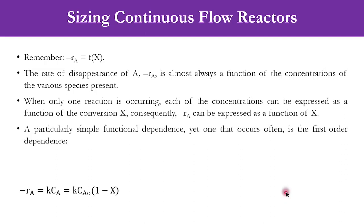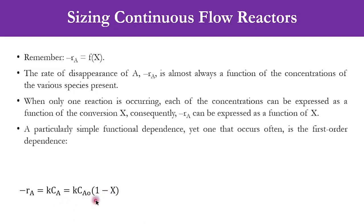For a first-order system, it is written as minus rA equals k times CA, and that CA is actually written as CA0 times (1 minus X). So accordingly, once CA is equal to CA0 times (1 minus X), minus rA becomes a function of X.